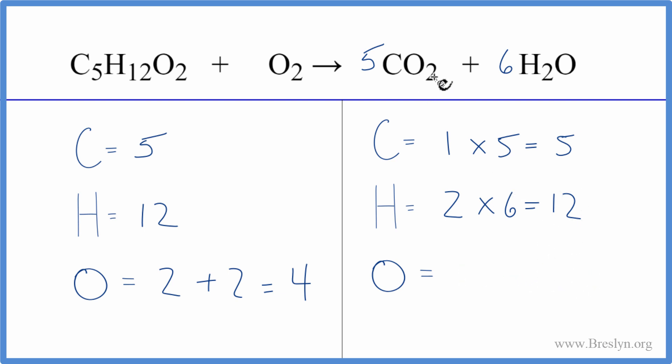So now we have two times five, that's ten, plus we have one times six. That gives us a total of sixteen. And that's good because that's an even number.